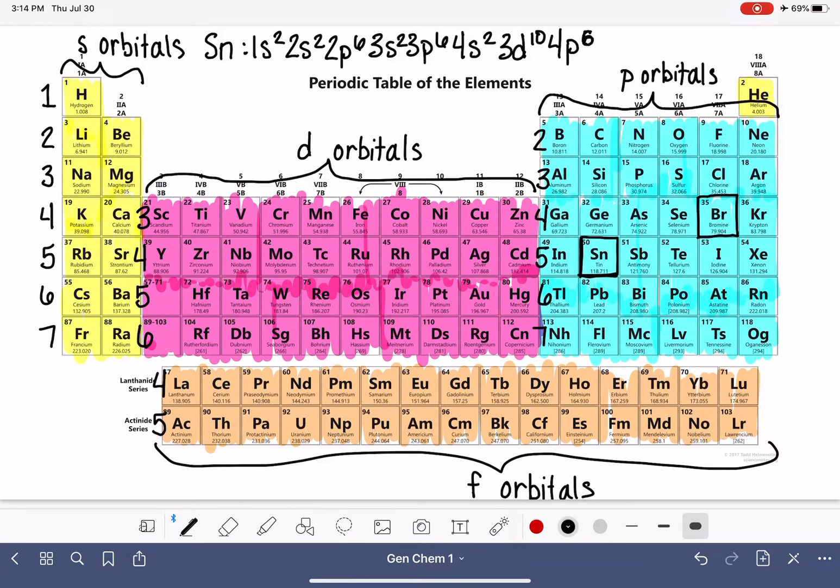So let's change that from a 5 to a 6 and then let's see what comes next. After this, our next one would be 5s², 4d¹⁰, 5p², 5s², 4d¹⁰, 5p². So there's our electron configuration for tin.